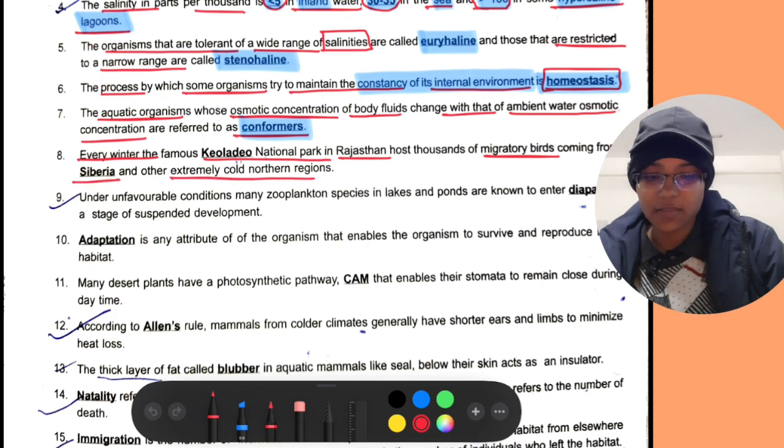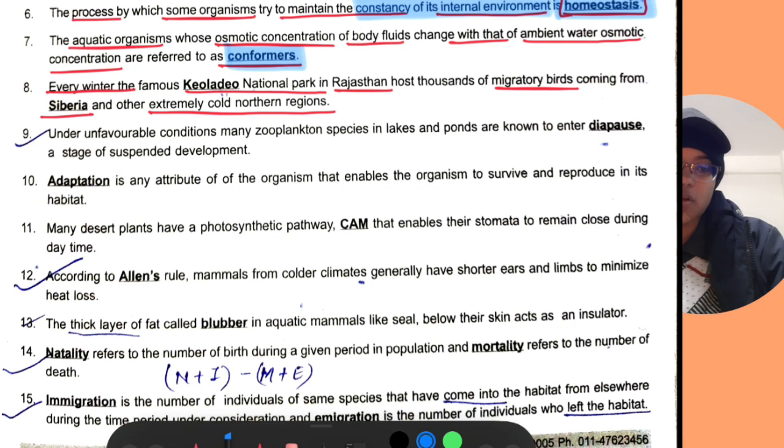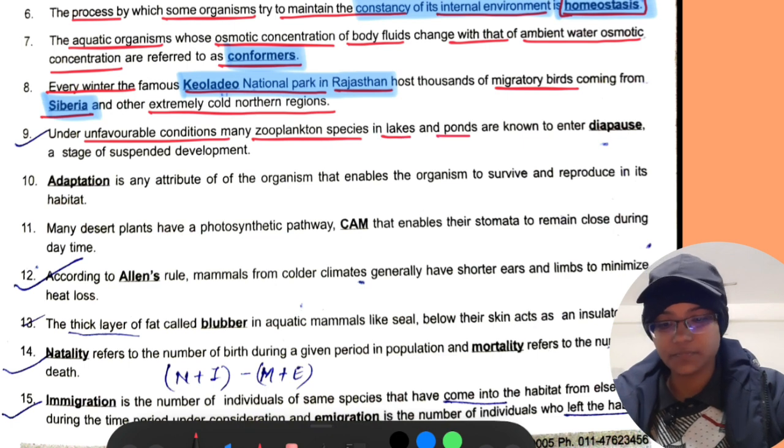Every winter, the famous Keoladeo National Park in Rajasthan hosts thousands of migratory birds coming from Siberia and other extremely cold northern regions.